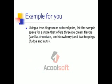Let's take a look at an example for you to do. Use a tree diagram or ordered pairs to list the sample space for a store that offers three ice cream flavors — vanilla, chocolate, and strawberry — and two toppings: fudge and nuts. Now would be a good time to pause the video so you can have a crack at this. The answer will be coming up momentarily.